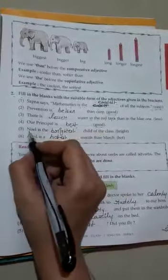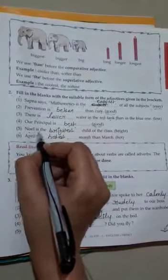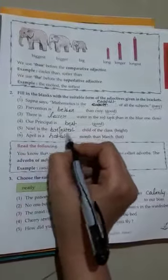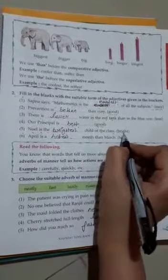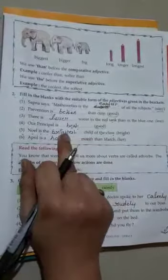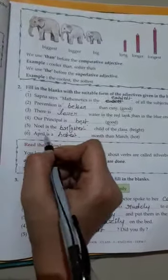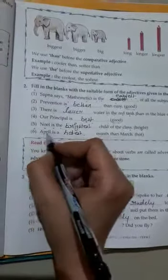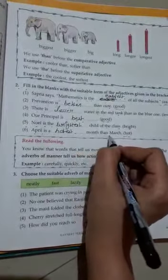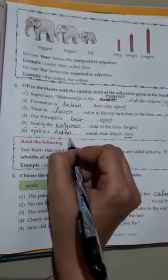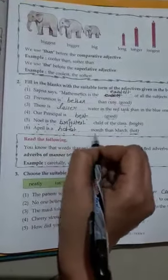Fourth: Our principal is best. Fifth: Noel is the brightest child of the class. Sixth: April is a hottest month than March.